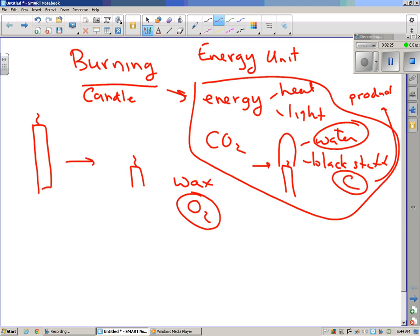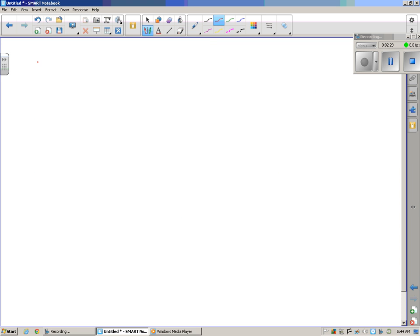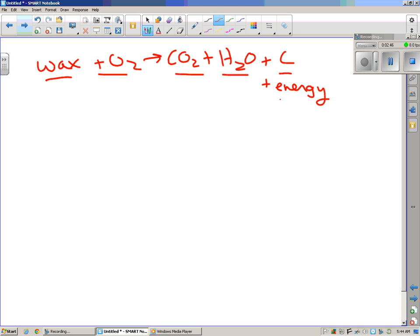So, let's take a look at that equation then. The equation is wax plus oxygen yields CO2 plus water plus carbon plus energy. That's a chemical equation. This is what is required, reactants. This is what is produced, products. My question for you is, what is it about the wax that makes it give off heat and light?